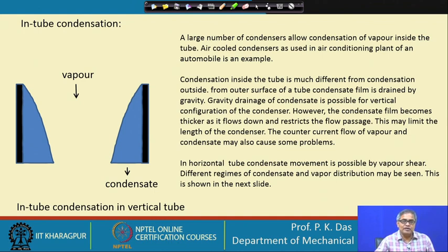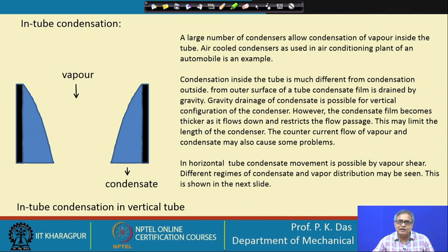In vertical tube condensers, in-tube condensation takes place inside the vertical tubes, and on the shell side there will be coolant. The vertical tube configuration is very good because gravity helps to drain out the condensate. Whenever we think of filmwise condensation, film drainage is one of the key issues, and gravity is the best method for film drainage.